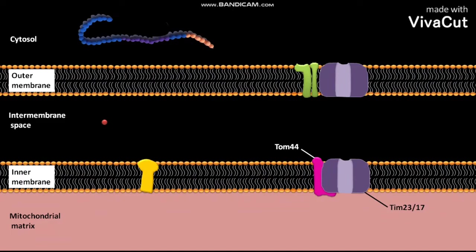There are two pathways through which the cytosolic proteins are delivered to the intermembrane space present between the outer membrane and inner membrane of mitochondrion.